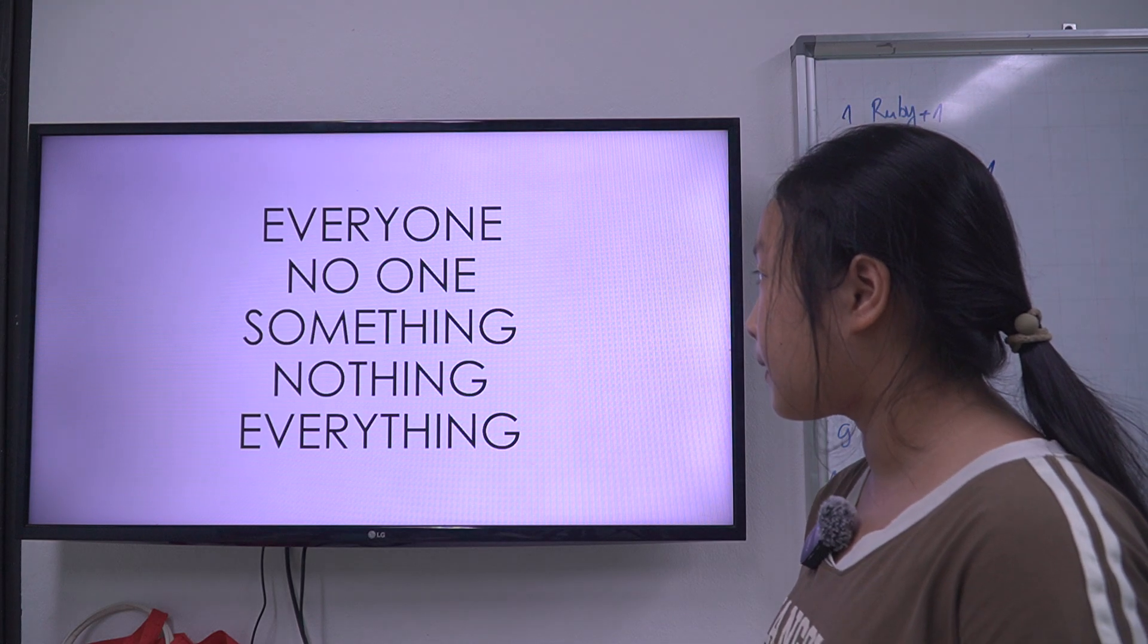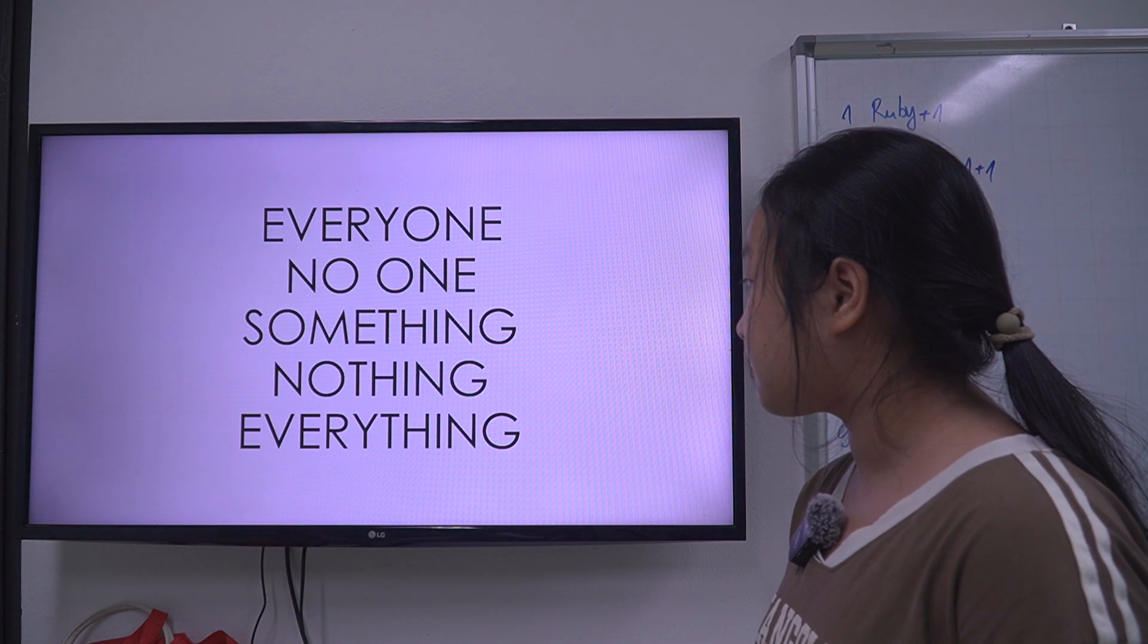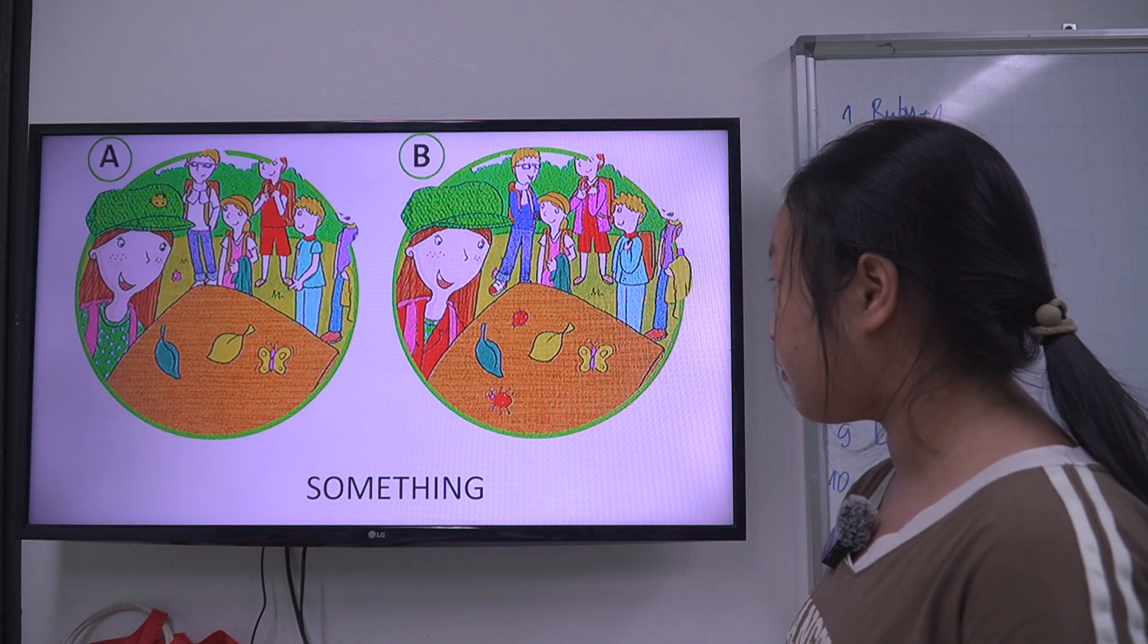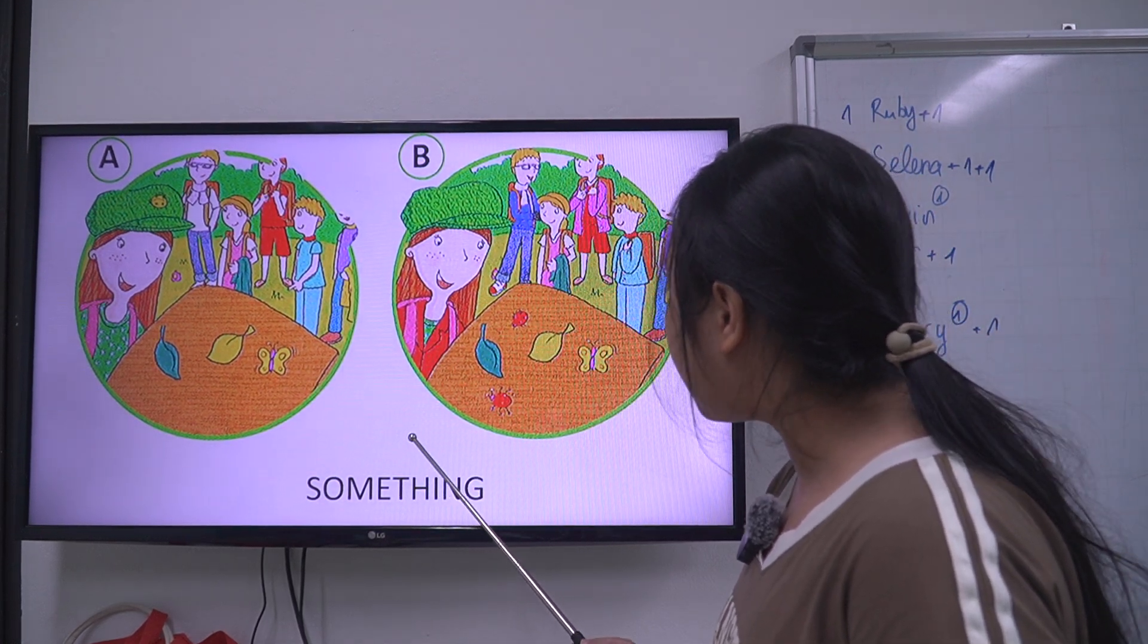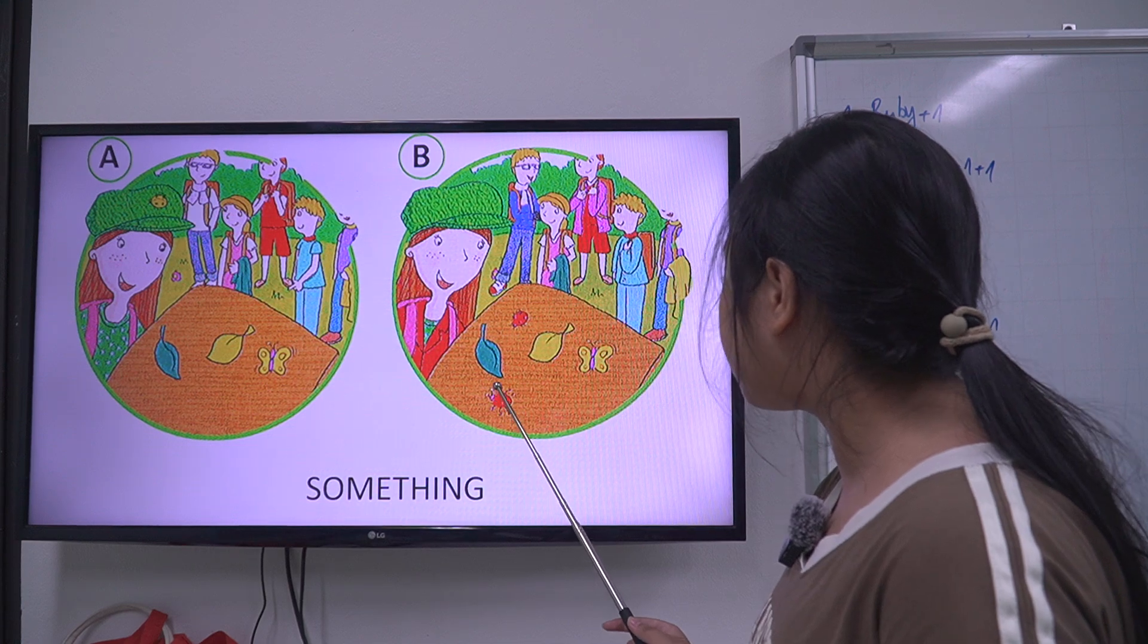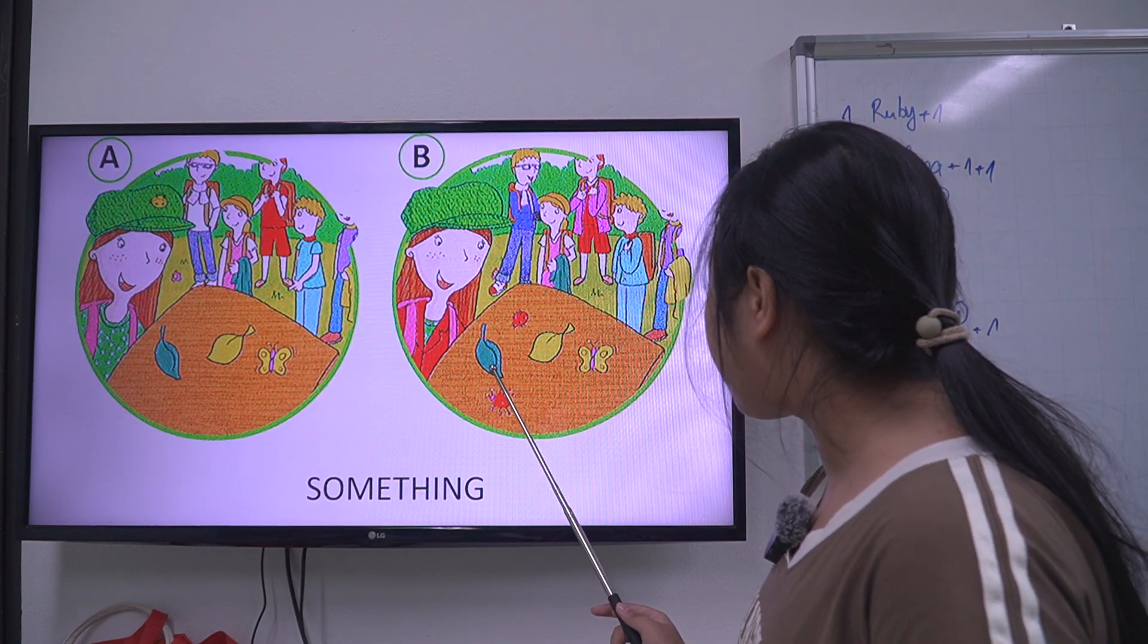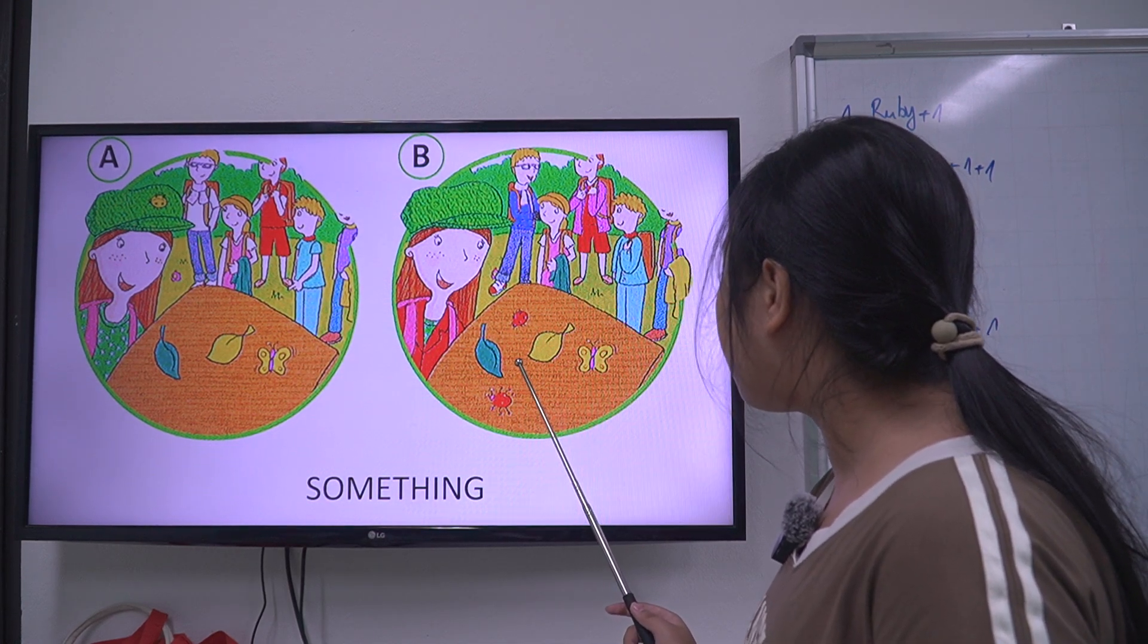Next one, let's make the sentence with everyone, no one, something, nothing and everything. Now, picture A, something, picture B. In picture B, something is on the table, it's green, yellow and red.